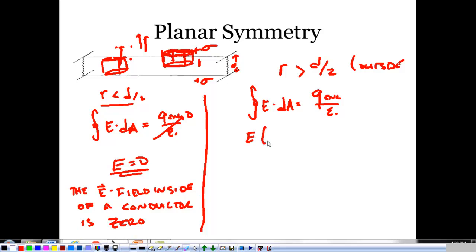And we know it's constant there. So it's E times just the area of the top. It doesn't matter what that shape is. And that's going to be equal to the enclosed charge over epsilon naught.